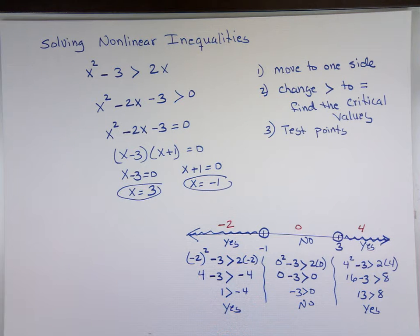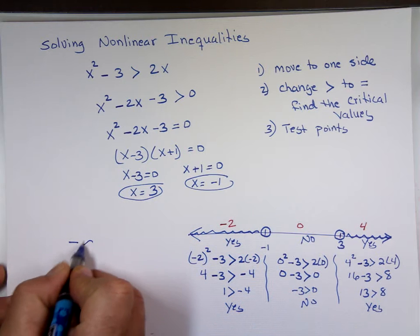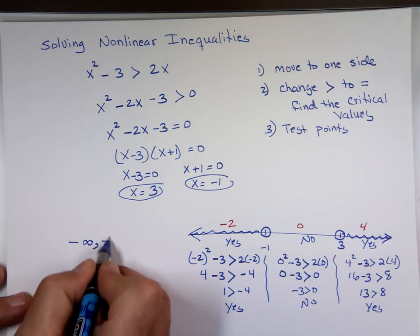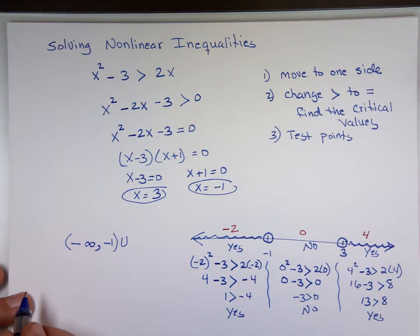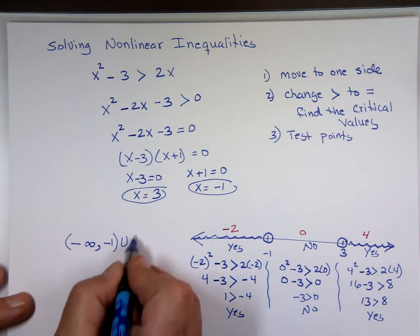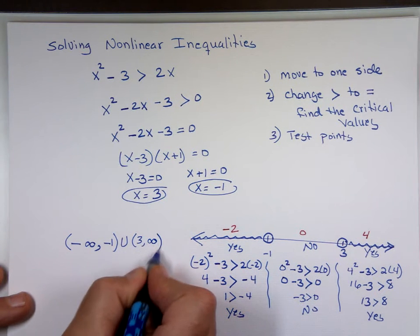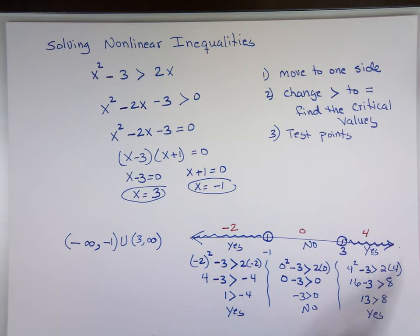So the answer is: from negative infinity to -1 (not included, open circle) union 3 to infinity (not included, open circle). In interval notation: (-∞, -1) ∪ (3, ∞). That's how we handle all non-linear inequalities.